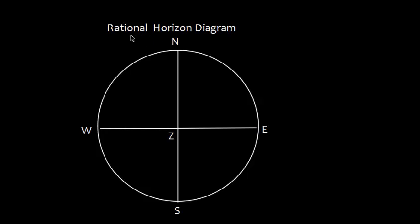Let us understand this with the help of rational horizon diagram. This is North, South, East and West. This is rational horizon and observer is at the center which is Z. In this diagram, WQE is the equinoctial, that is the projection of equator, and QZ is the latitude.